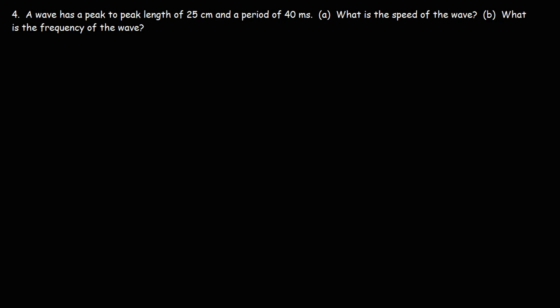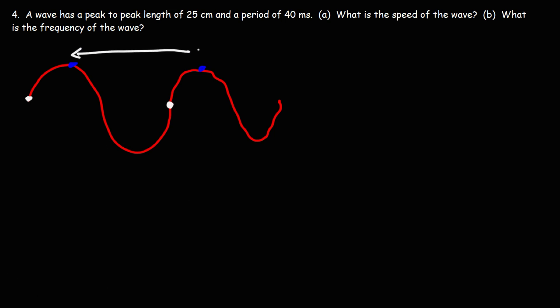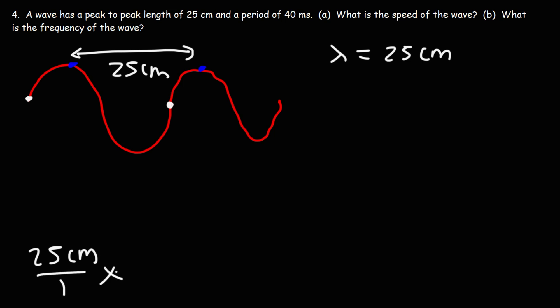Problem 4: a wave has a peak-to-peak length of 25 centimeters and a period of 40 milliseconds — what is the speed? The peak-to-peak distance is the wavelength, so λ = 25 cm. Converting to meters: 25 / 100 = 0.25 meters. The period is 40 ms; converting to seconds: 40 / 1000 = 0.04 seconds.